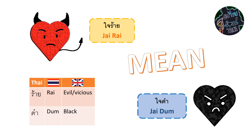Well, you have two choices. The first one is zai rāi, and the second one is zai dām. But usually you can also say them together: zai rāi zai dām.